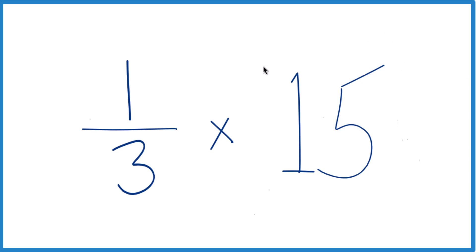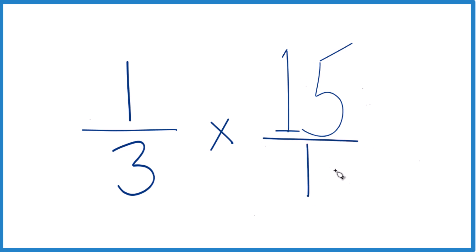And let's take the 15 here, shrink this down a little bit, and we're going to call this 15 over 1. Because 15 divided by 1 is still 15, we haven't changed anything, but now the numerators and denominators line up nicely.